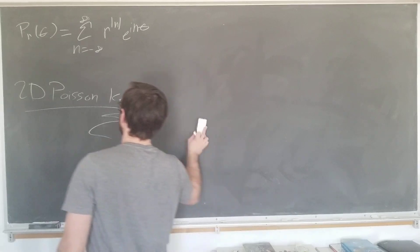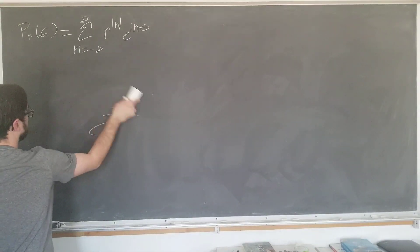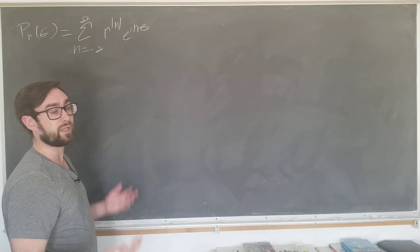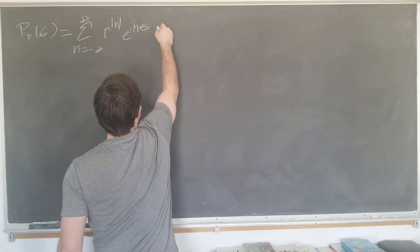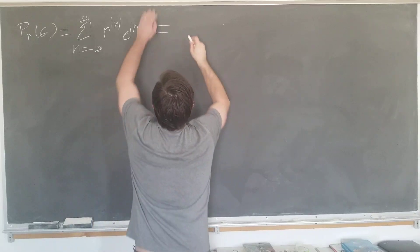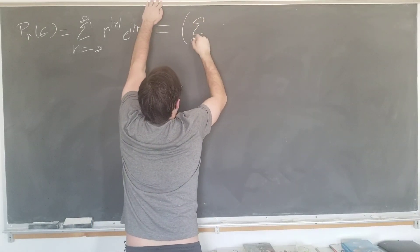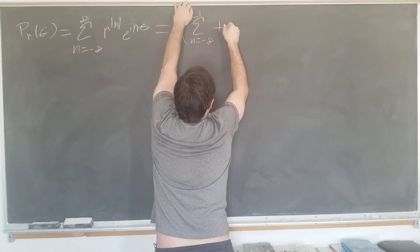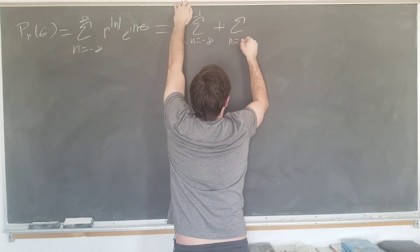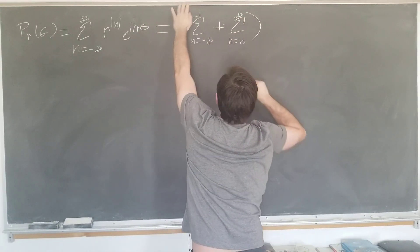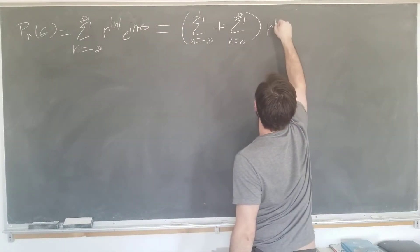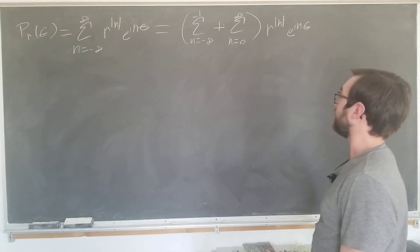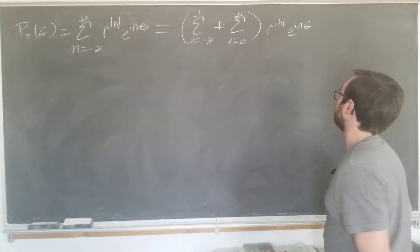We are going to begin, as the absolute value hints, by writing this as a sum of two sums, the negative and the positive values. We can write this as n goes from minus infinity to minus 1 plus sum as n goes from 0 to infinity of our kernel here, r to the absolute value of n, e to the i n theta. When we do this we are going to get rid of the absolute value.